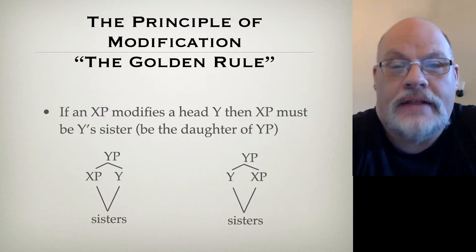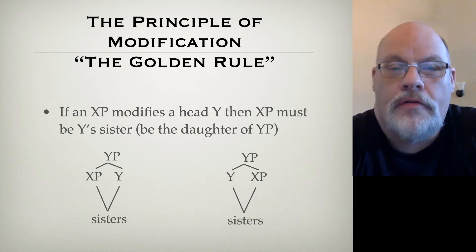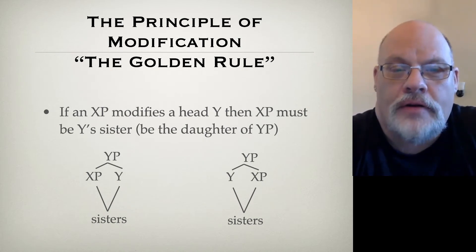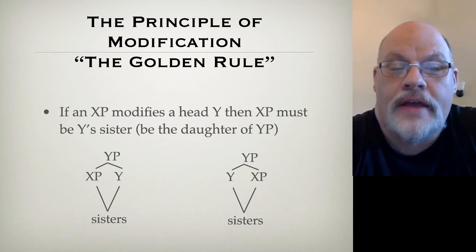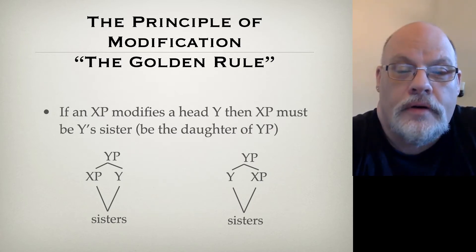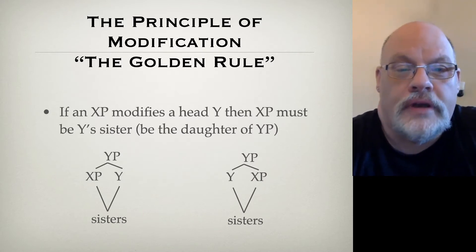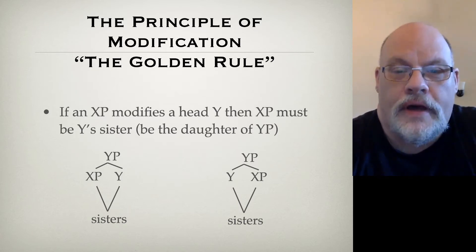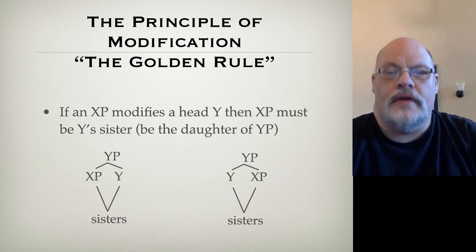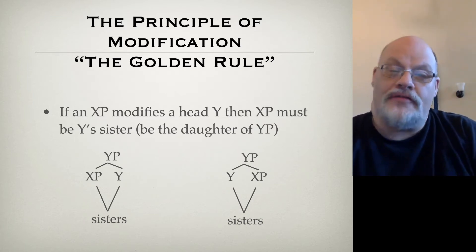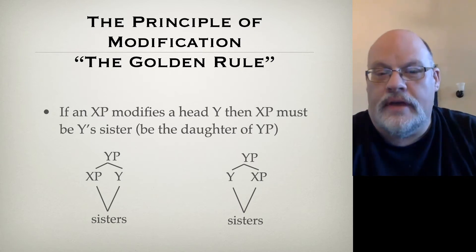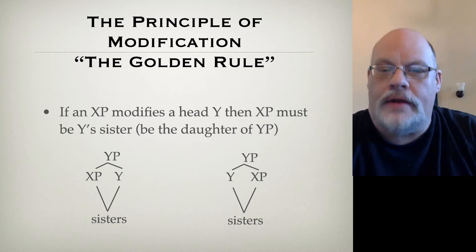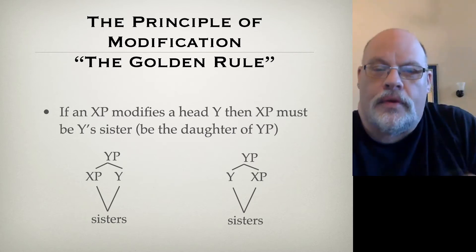How are we going to explain these structurally ambiguous sentences? Recall our principle of modification — that golden rule of syntax — which says: if some phrase modifies a head, then that phrase must be Y's sister. The XP is a sister of Y in both of those trees. What we find is that when you have a structurally ambiguous sentence, you have a phrase that could be attached into the tree in two different places — attached to one head or to another head — giving you different modification relationships.